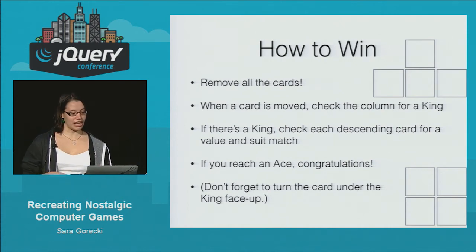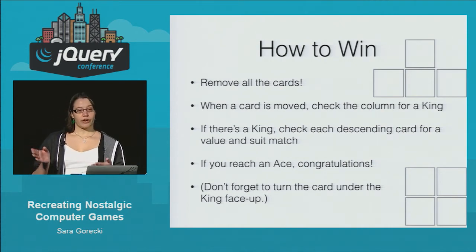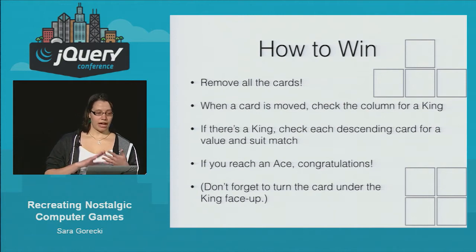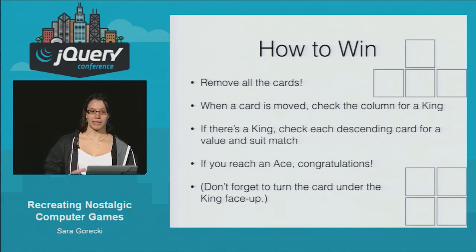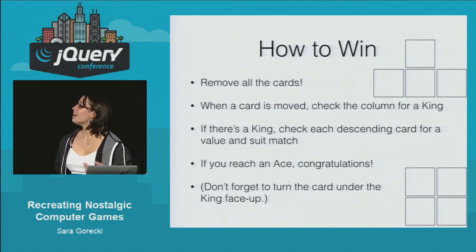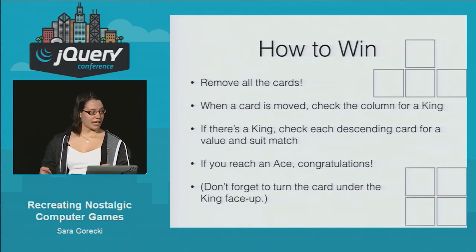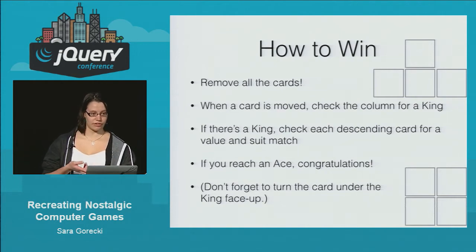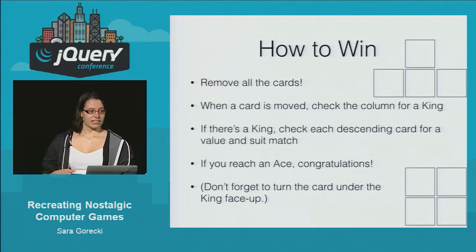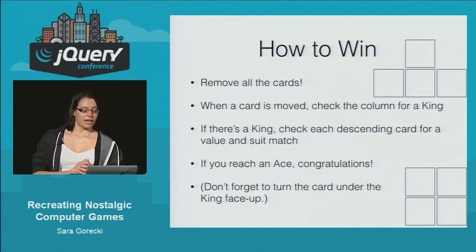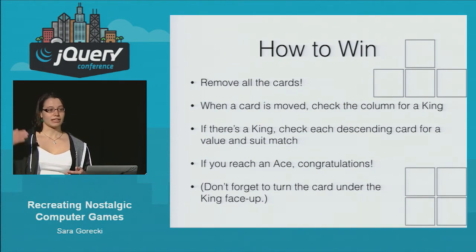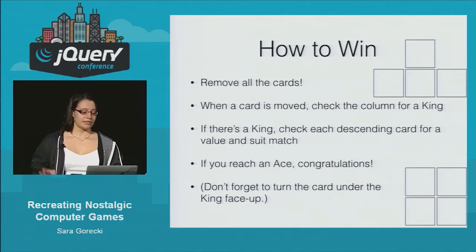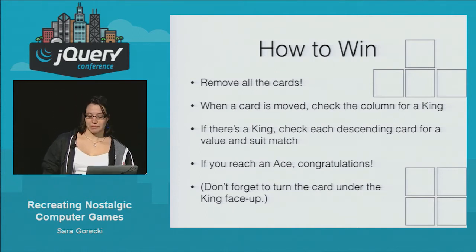Finally, in order to check how to win the game, once a card is moved from one column to another, I would evaluate that column and see if there was a king in it, because without a king you can't win. If a king was found, I would work my way down the column and check each card to see if the suit and value were appropriate for that set. If it was wrong, I could just give up and try again later. But if it stayed correct and I got all the way down to finding an ace of the same suit, then that whole set of cards can be removed and you're one step closer to winning.